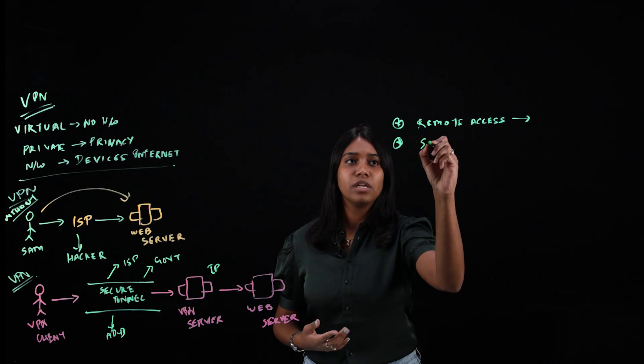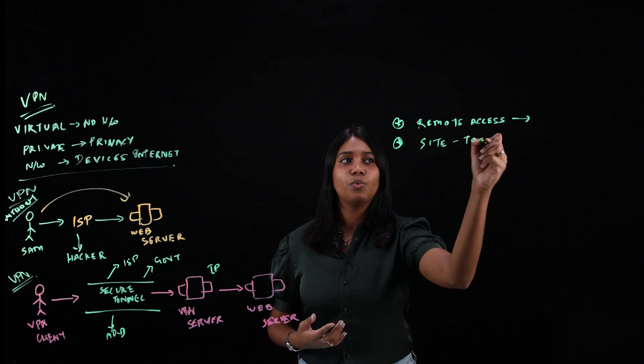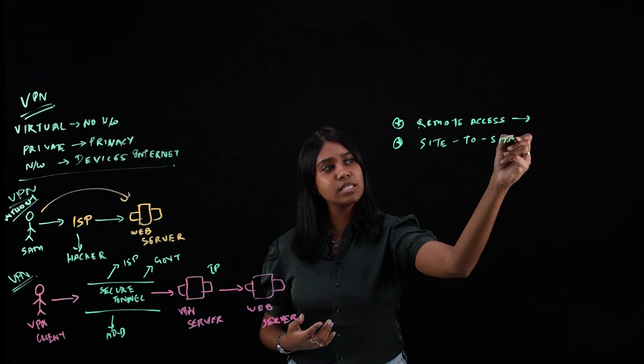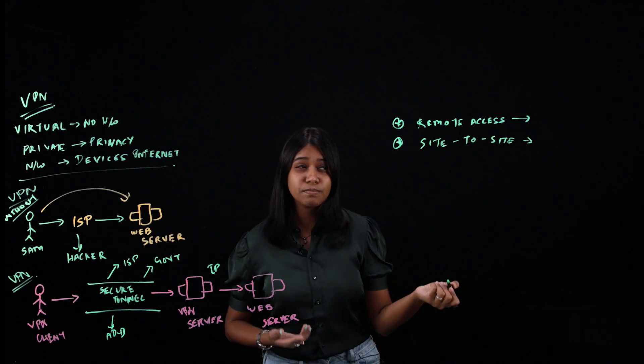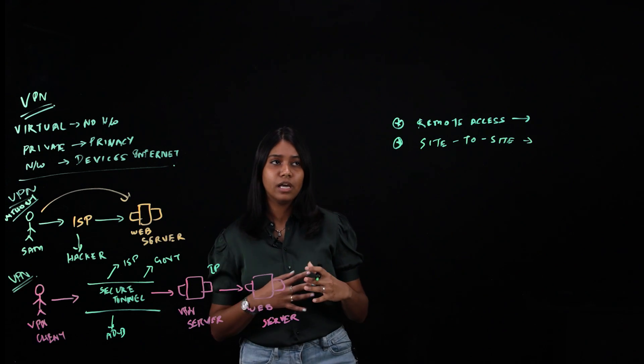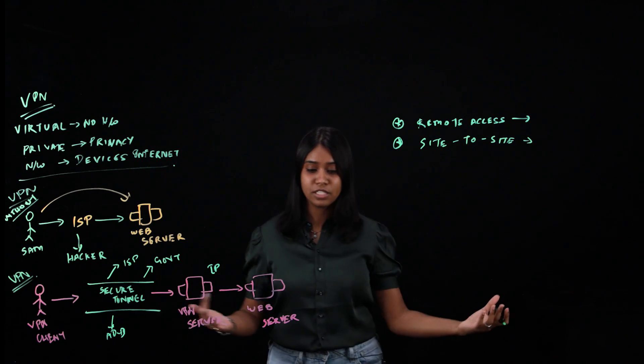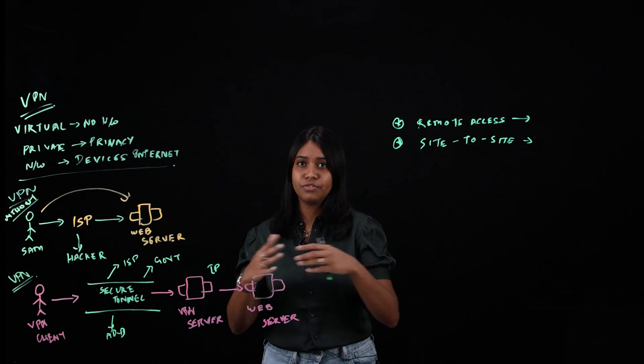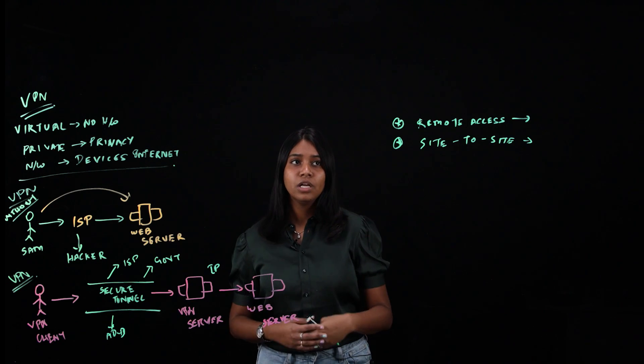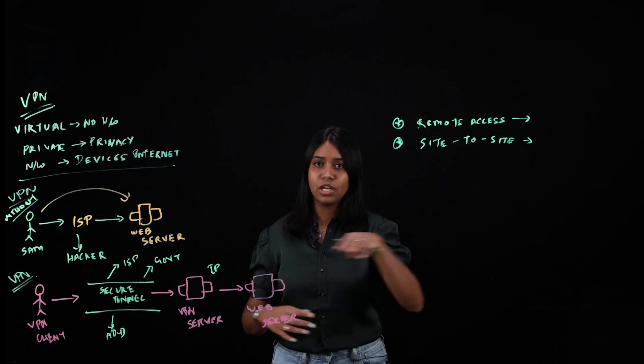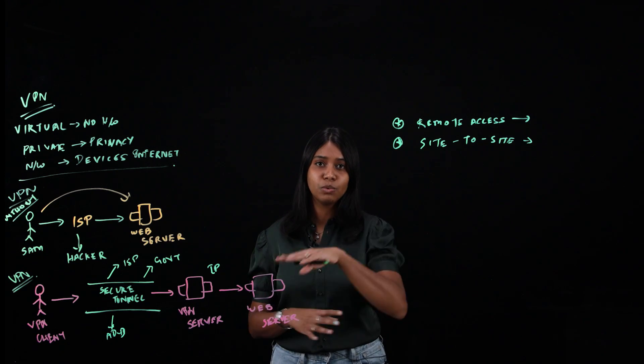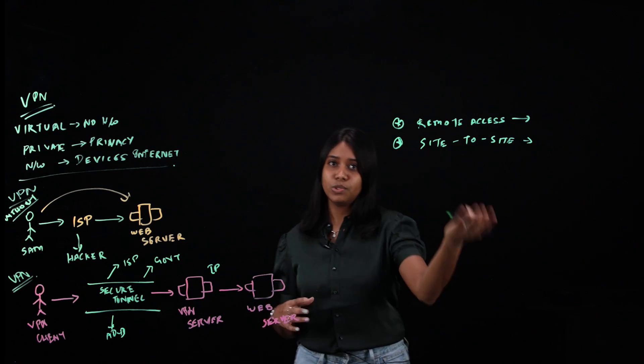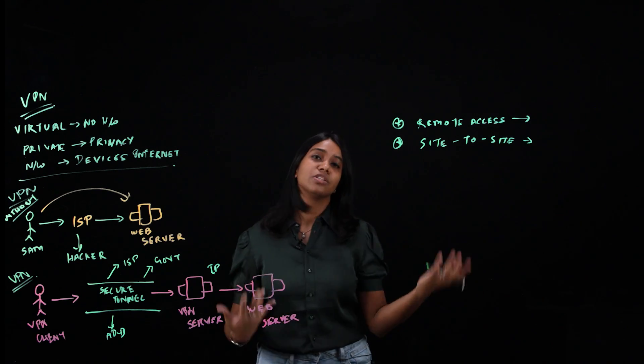And the next one is the site-to-site VPN. Site-to-site VPN is mostly used by large companies. Imagine they have multiple branches located in different locations. They need something interlinked. They need network connectivity between these different branches. They use site-to-site VPN to access each other's data.